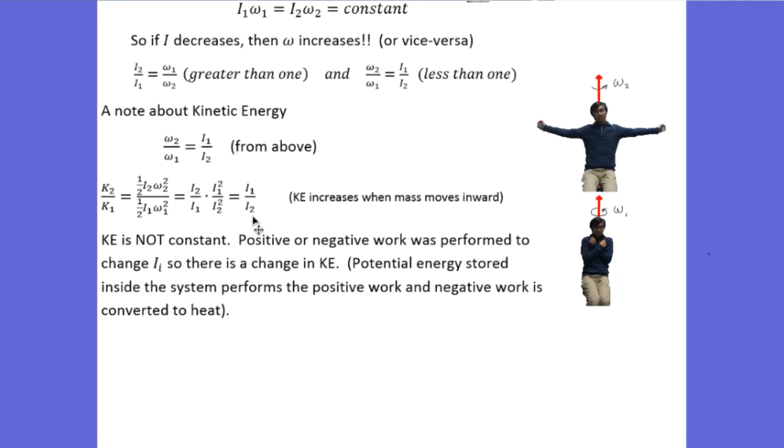So that tells us that the kinetic energy changes between situation one and situation two. So where is that energy coming from or where is it going to? Well, work is being done. Positive work is being done by the muscles when you pull your arms in and negative work is being done when you stop your arms from moving outward. And so that accounts for the change in kinetic energy.